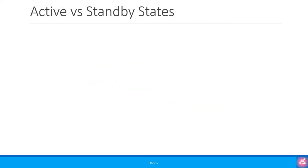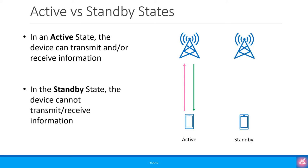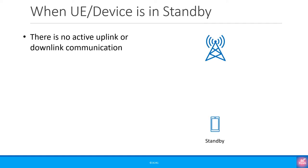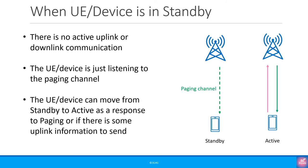Looking at active and standby states in a mobile cellular device: in an active state the device can transmit and/or receive information, while in the standby state the device cannot transmit or receive information. When a mobile device is in standby, there is no active uplink or downlink communication — the UE is just listening to the paging channel. The device can move from standby to active as a response to paging or if there is some uplink information to send.